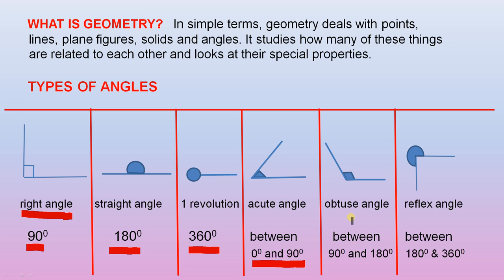The next angle is an obtuse angle, anywhere between 90 degrees and 180 degrees. And finally we have a reflex angle, which is between 180 degrees and 360 degrees.